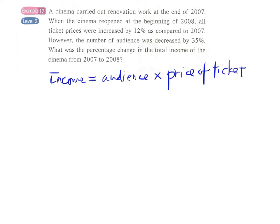Since this problem does not give us the number of audience in 2007 and the original price of tickets in 2007, we have to let the number of audience and the price of tickets be variables x and y.